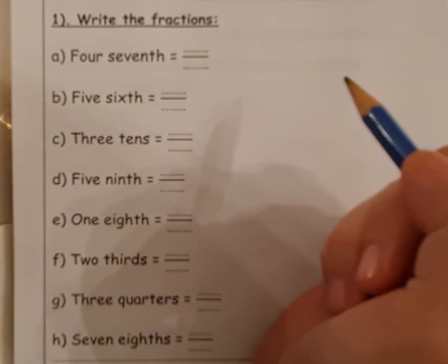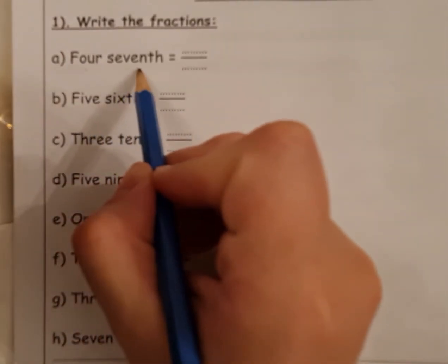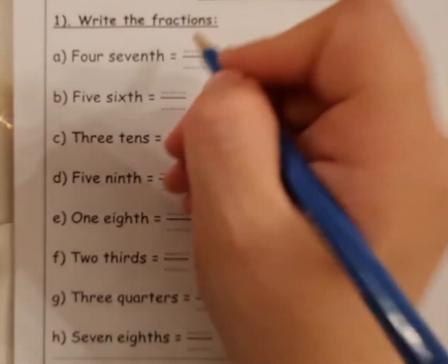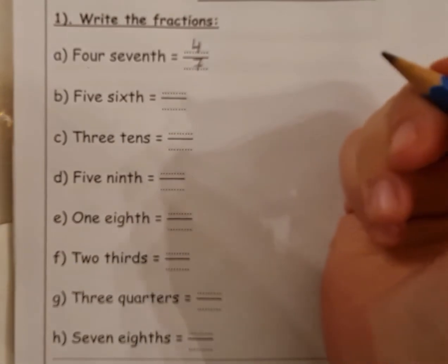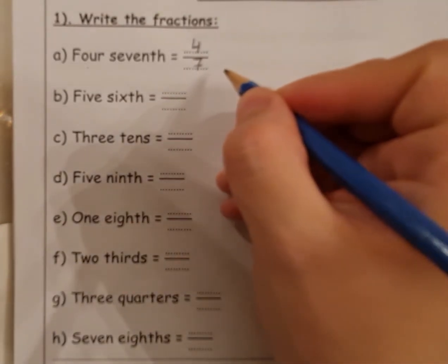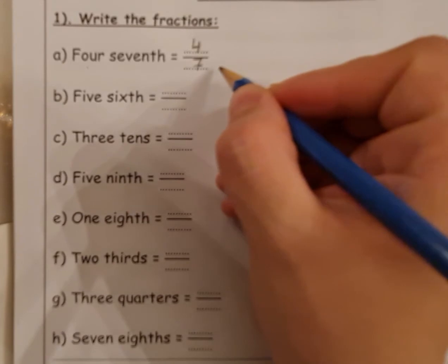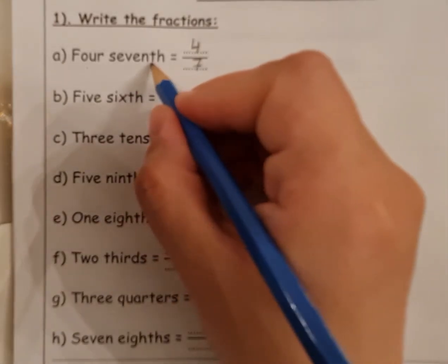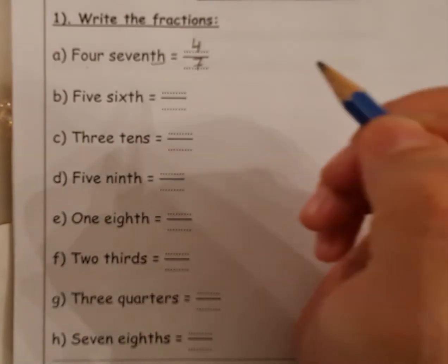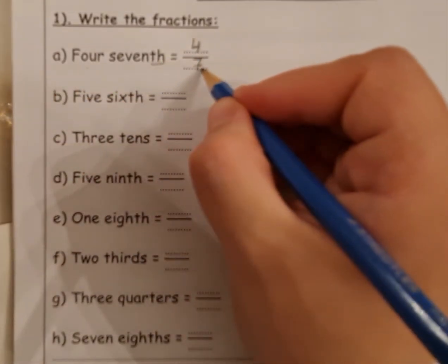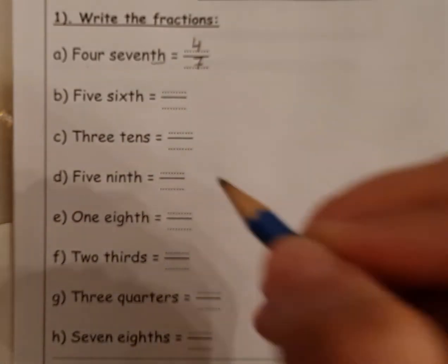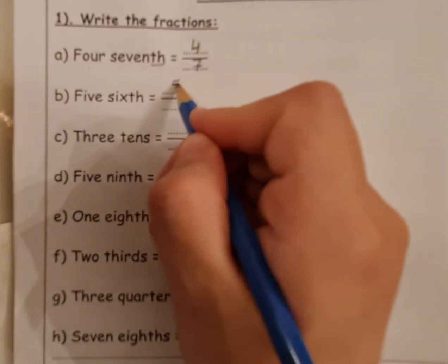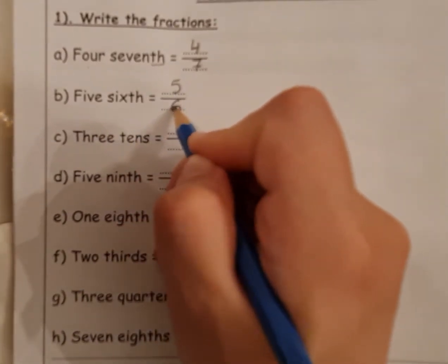In this page he wants me to write the fractions. For seventh, the first number I write it here - four seventh like this. Every time the denominator ends with 'th', every time we can see this. Four seventh. So this means the seven in the denominator place. Five sixth - so six would be in the denominator place.